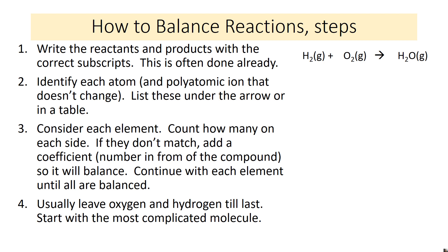The first step is to write the reactants and products with the correct subscripts — this is often already done. In our example, H₂ has a subscript of 2 because hydrogen is diatomic, O₂ is also diatomic with a subscript of 2, and the product water is written correctly as H₂O. Our next step is to identify the atoms involved, or if you have a polyatomic ion that doesn't change, you can treat that as a group.